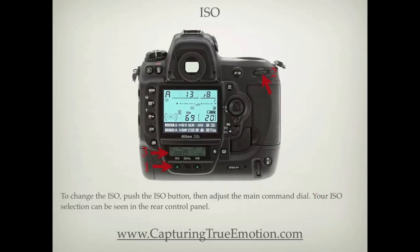To change the ISO, push the ISO button, then adjust the main command dial. Your ISO selection can be seen in the rear control panel.